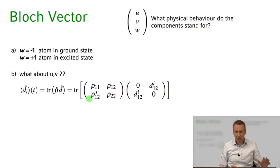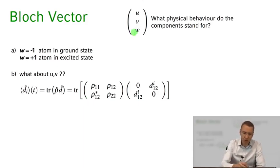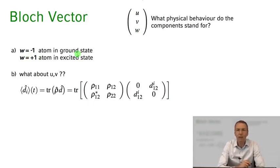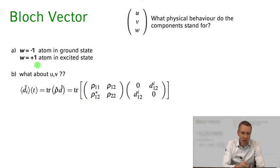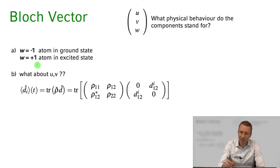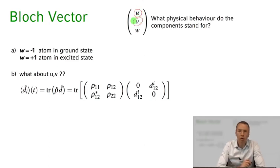As I mentioned, w we already know: when w was minus one it described an atom in the ground state, and when w was plus one — the inversion — it described an atom in the excited state. Today everything is about these u and v components of our Bloch vector.